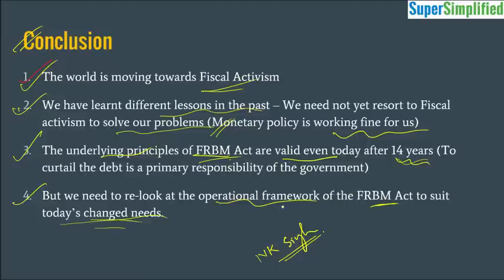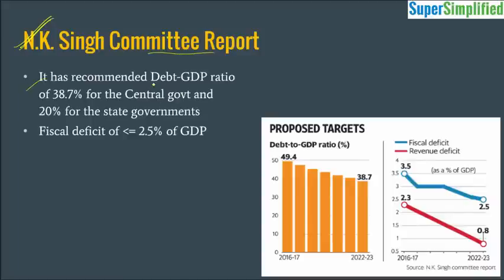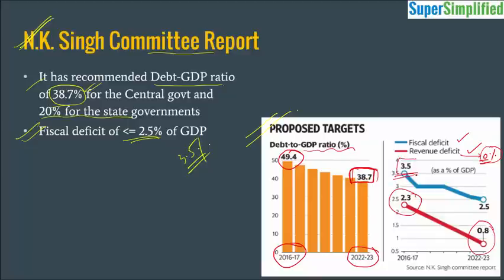The NK Singh Committee report, though not directly part of the economic survey, contains important recommendations. It recommends the debt to GDP ratio should be 38.7% for the central government and 20% for state governments. The fiscal deficit target is below 2.5% of GDP, down from the current 3.5%. The revenue deficit should ideally be zero but has been recommended at 0.8% of GDP, down from the present 2.3% of GDP. The current debt to GDP ratio in 2016-17 is around 49.4%, and the target date for all these reductions is the 2022-23 financial year.